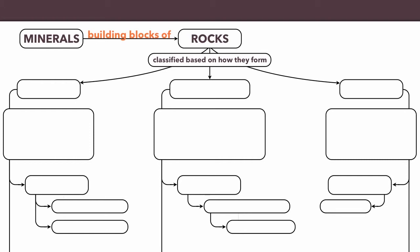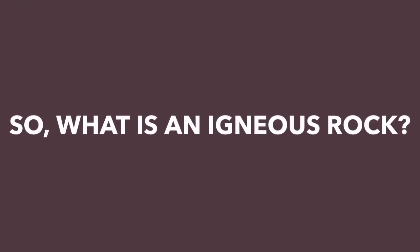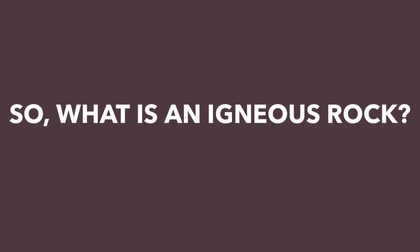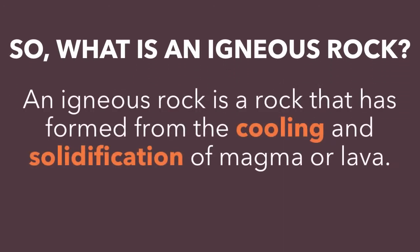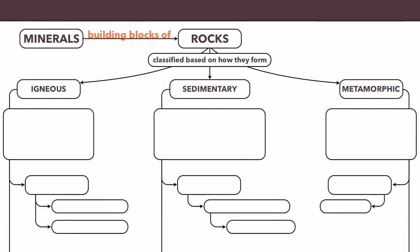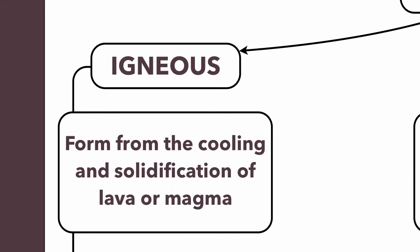If you do this classification, you will have three categories: igneous rocks, which we'll talk about today, sedimentary rocks, and metamorphic rocks. So what exactly is an igneous rock? An igneous rock is a rock that formed from the cooling and solidification of magma or lava.